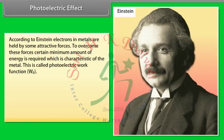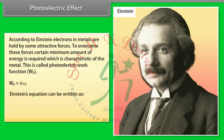According to Einstein, electrons in metals are held by attractive forces, and a certain minimum energy is required to overcome these forces, characteristic of the metal. This is called the photoelectric work function W₀: W₀ = h·nu₀. Einstein's equation: h·nu = h·nu₀ + KE, so KE = h·nu − h·nu₀.